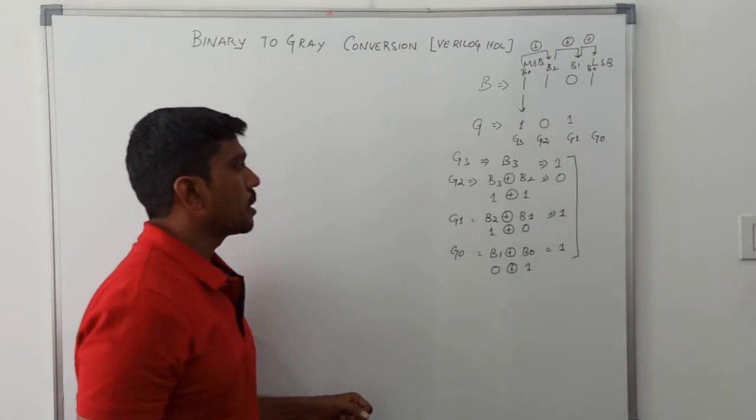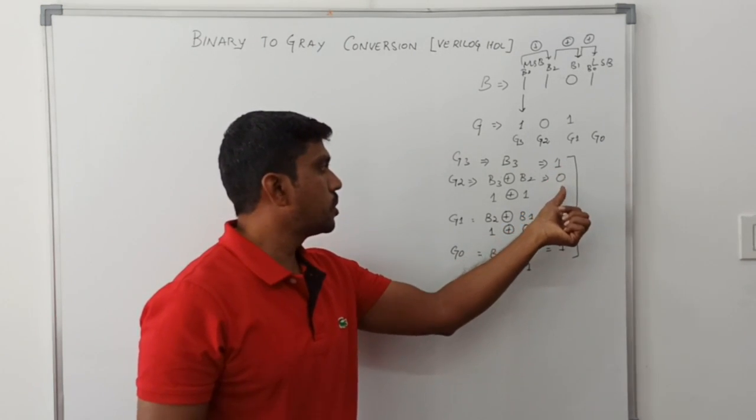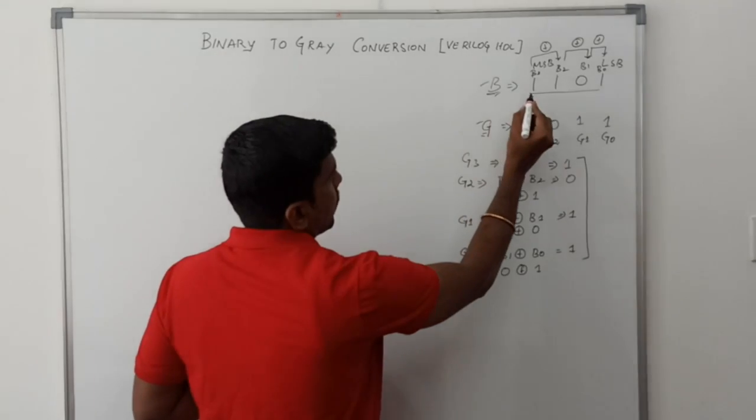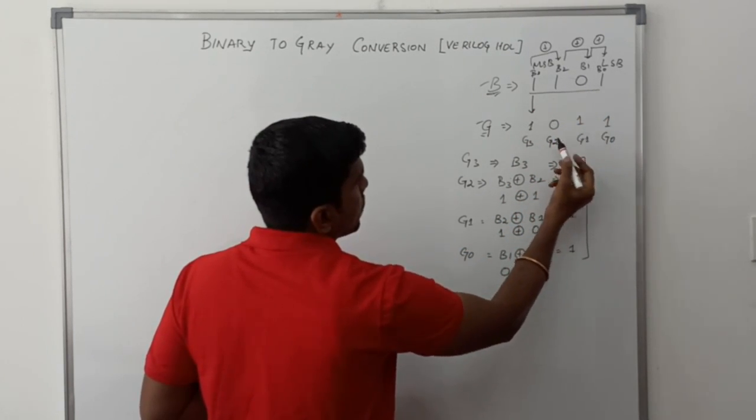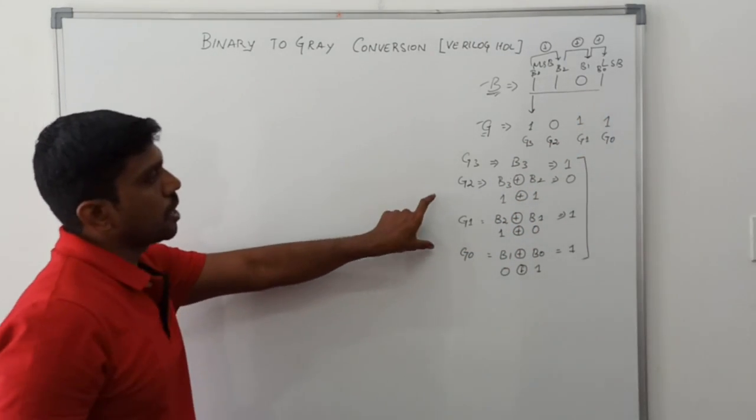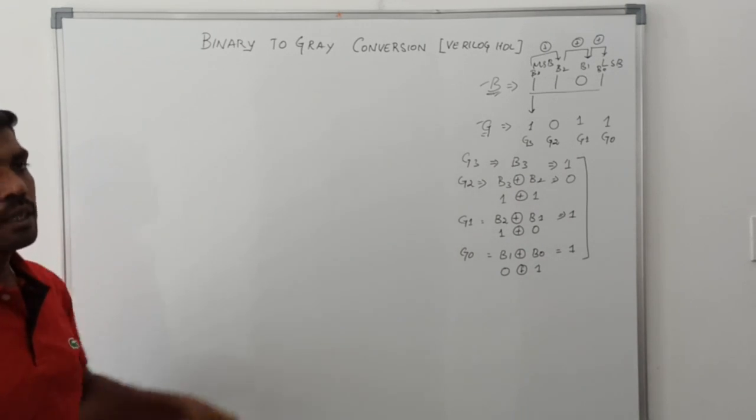So the gray value is 1011. The binary value is 1101, and the gray code is 1011. The same procedure is used in the program.